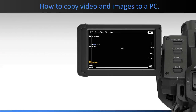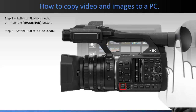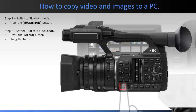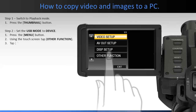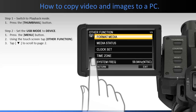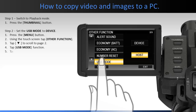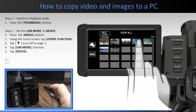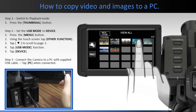To prepare for the copy process, switch the camera to the playback mode by pressing the thumbnail button. Set the USB mode to device. To do so, press the menu button. Using the touch screen, tap Other Function. Tap the arrow down icon to go to page 2 and tap the USB Mode function. Tap Device. Using the supplied USB cable, connect the camcorder to a PC.